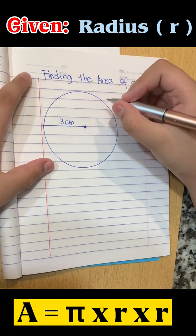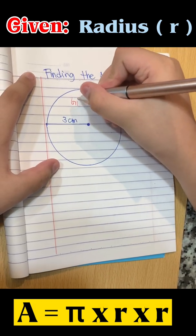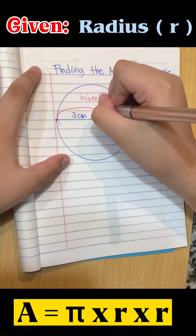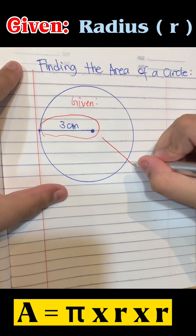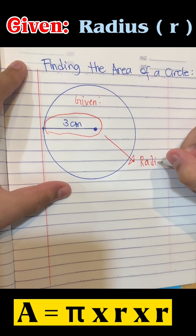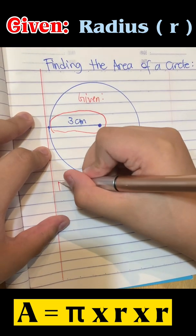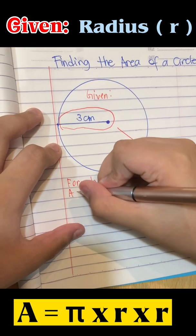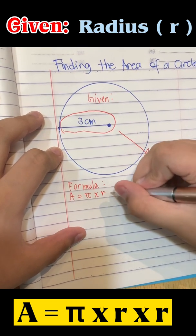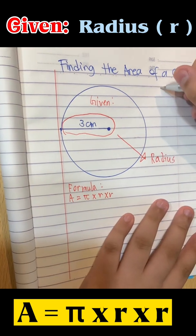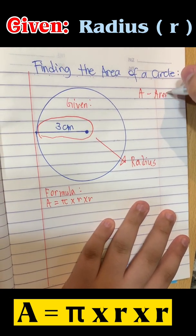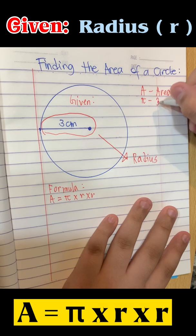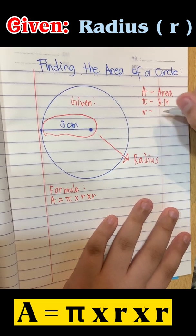In finding the area of a circle, first find the given. If the given is a radius, use this formula. A is always 3.14, and R is radius.